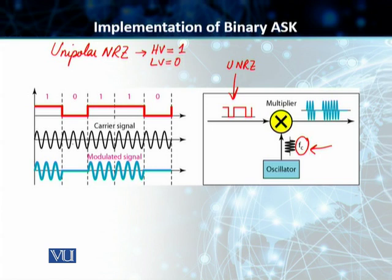As you can see, wherever we had a 1, the carrier signal that is produced by the oscillator in the modulator signal, wherever we have a 1, the amplitude of the carrier signal is maintained.